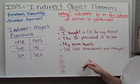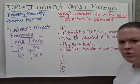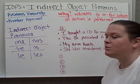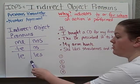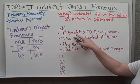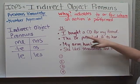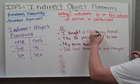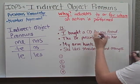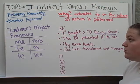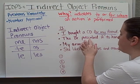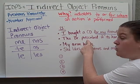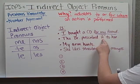Here are some examples to give you an idea about when we would use an indirect object pronoun. We're going to identify them in English first and then write them in Spanish, using purple for the indirect object pronouns. I bought a CD for my friend. I bought a CD for whom? For my friend. The doctor prescribed the medicine to her — to whom? To her.